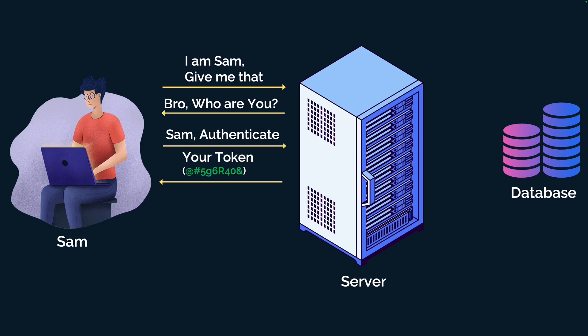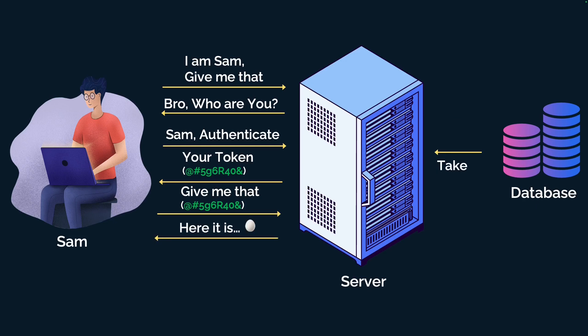The token can be any string that belongs to Sam for a particular period of time, so Sam can exchange it as a key with the server for further requests without having to key in the user ID and password every time. Sam sends a request along with the token, the server validates the token, identifies it's Sam, fetches the data, and returns it. That's how authentication works at a high level.